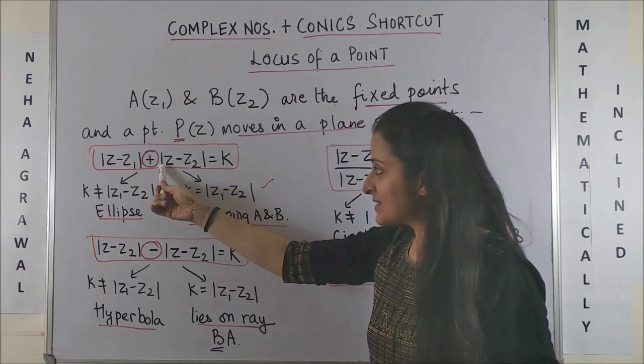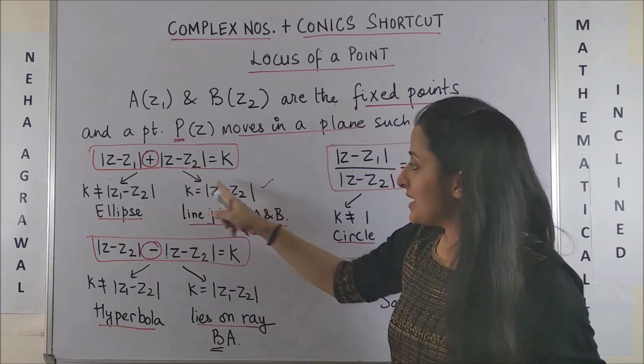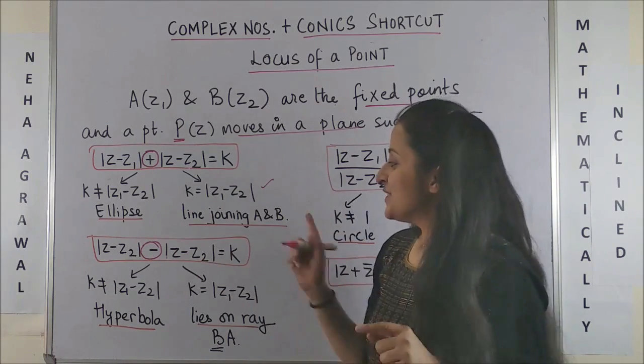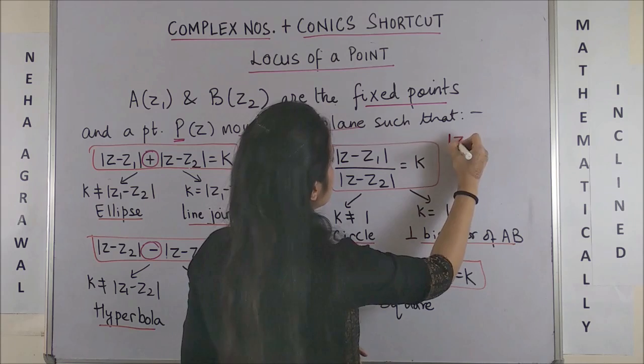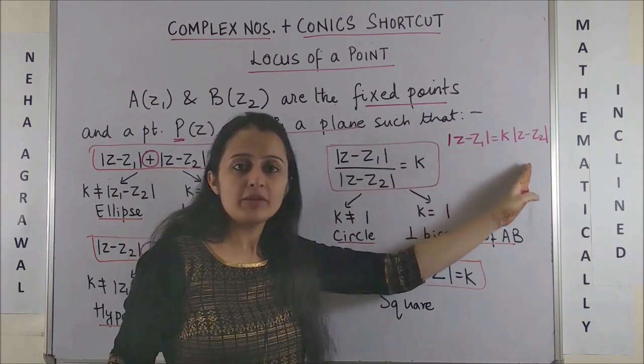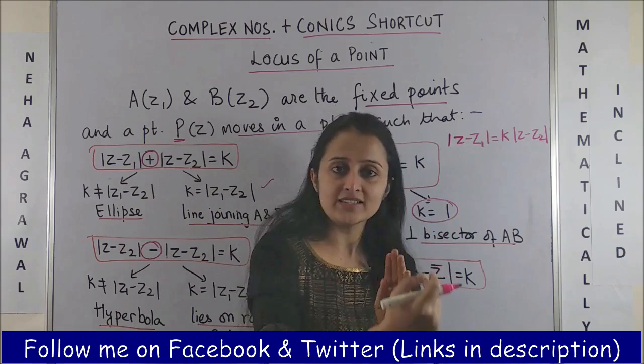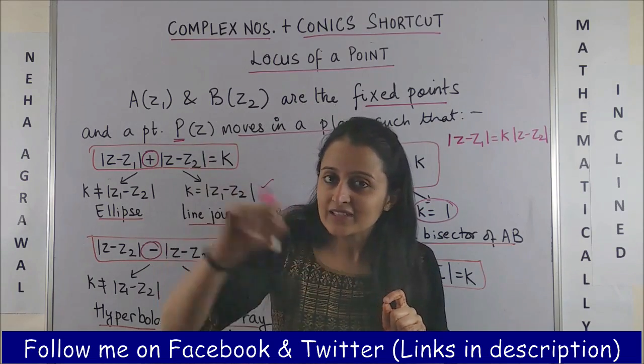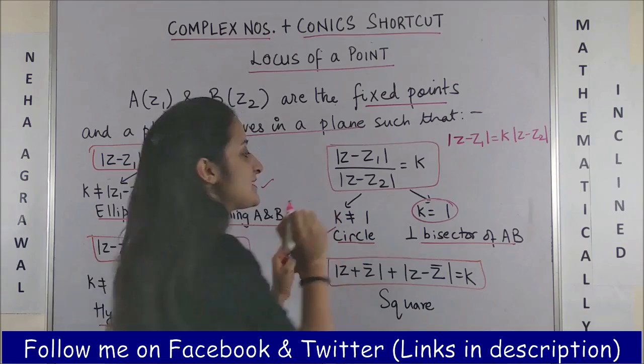You basically have to remember: for plus, it's an ellipse if it is not equal; for minus, it's a hyperbola if it's not equal. For plus, if they are equal, it's simply on the line segment joining AB, and this is on the ray joining BA. On this side, if you come across |z-z₁| = K·|z-z₂|, it could be in the ratio form or this form. Then in that case, if your K is equal to 1, in short, if |z-z₁| is the same as |z-z₂|, then simply your P lies on the perpendicular bisector of AB. And in case K is not equal to 1, then it is simply a circle.